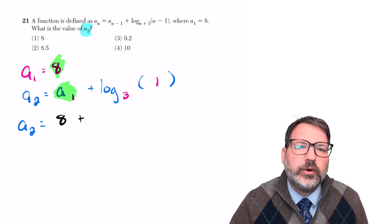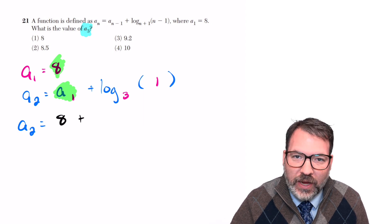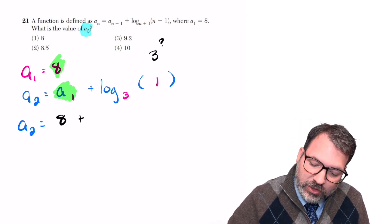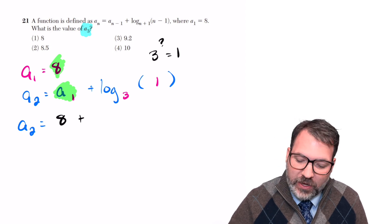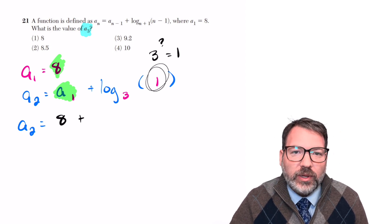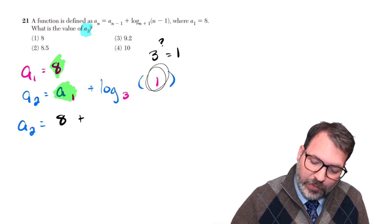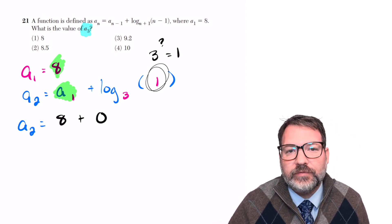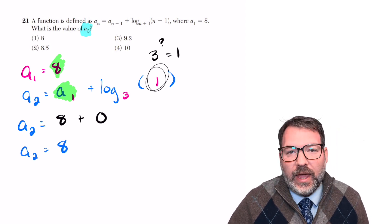I kind of alluded to this earlier, a logarithm is really about an exponent, it's actually the inverse of the exponential process. So here we're asking the question, 3 to what power equals 1? Fortunately this has a very easy answer. Anytime our argument is 1, 1 is always the result when we raise any base to the zeroth power. So log base 3 of 1 is in fact 0, and so what we're getting here is that a sub 2 is equal to 8.